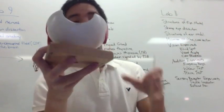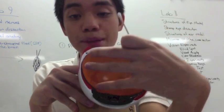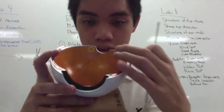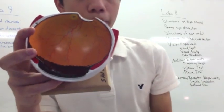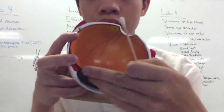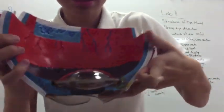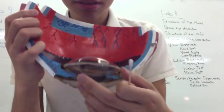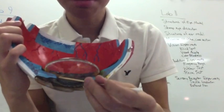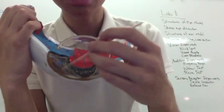Then we have the different chambers. This back portion right here is called the vitreous chamber, and the fluid in here is called the vitreous humor. Then you have the two chambers up front. The space behind your iris is called your posterior chamber, while the space in between your lens and your cornea is called the anterior chamber.